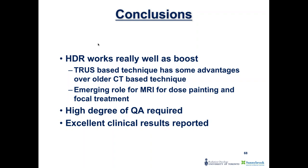Question: what margin do you use for focal treatment? For focal boost, we identify the GTV — the dominant intraprostatic lesion, or DIL — on multiparametric MRI, using a union of the T2-weighted hypointense lesion and the area delineated on DWI imaging, taking the greater of both volumes. We fuse using MIM software and then add a 5-millimeter margin, based on pathology from radical prostatectomy specimens showing this would cover 95% of disease in these patients. The volume is carved away from the urethra and constrained within the prostate.